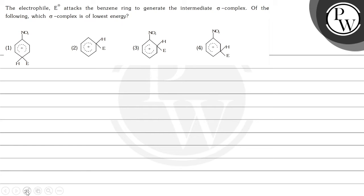Hello Bachchon, let's read this question. Question says, the electrophile attacks the benzene ring to generate the intermediate sigma complex. Of the following, which sigma complex is lowest energy? So in which of these is the sigma complex of lowest energy?